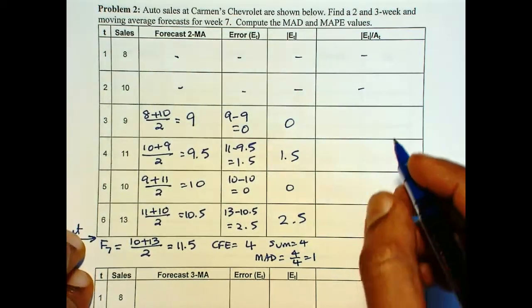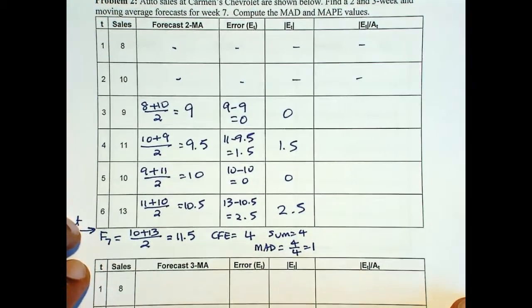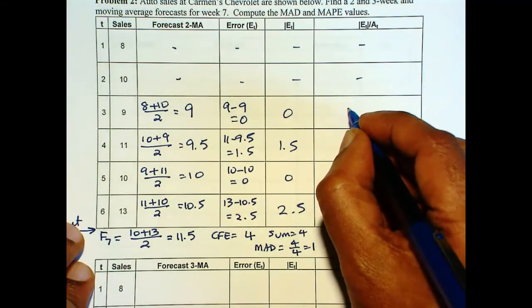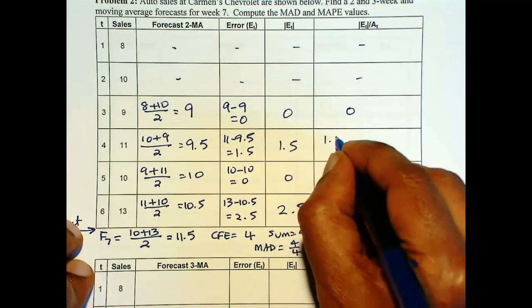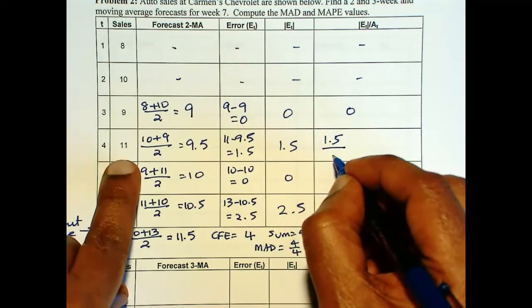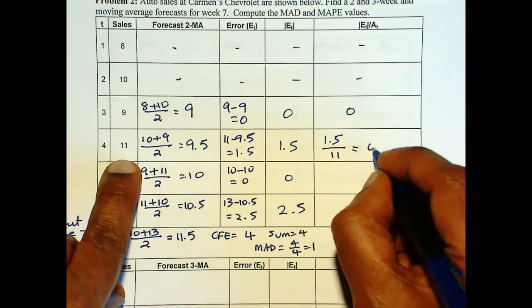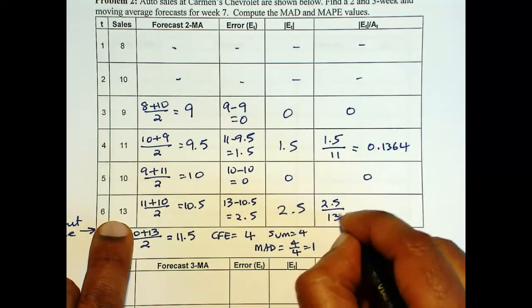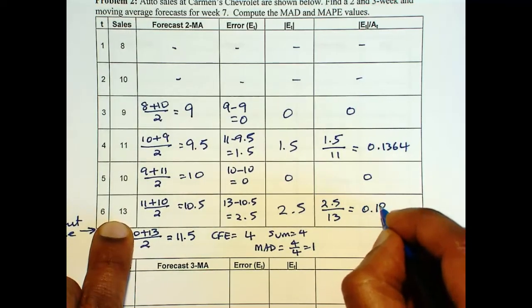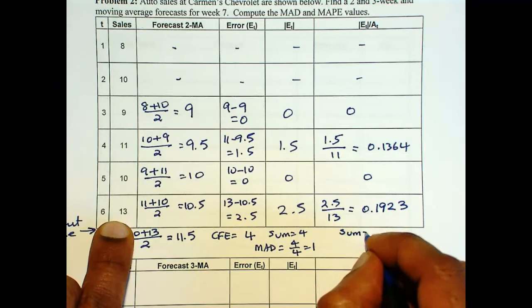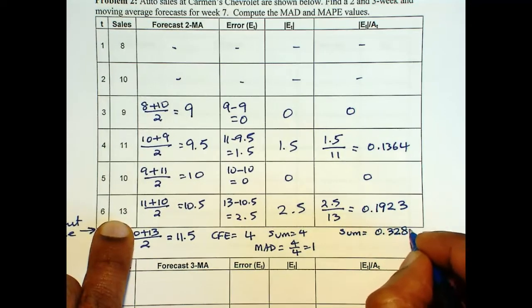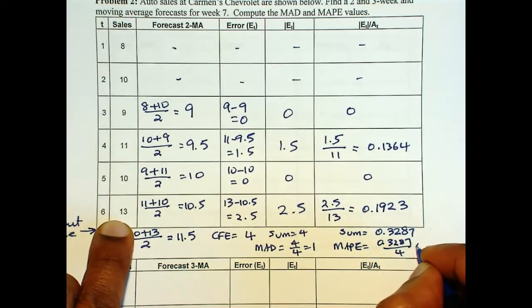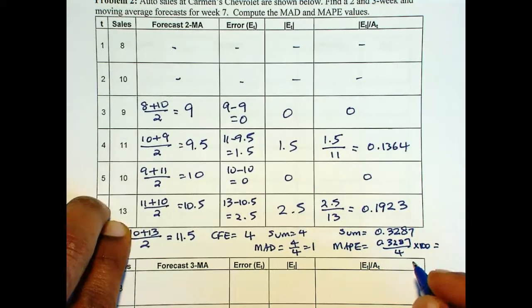Now to compute MAPE, in this problem we'll do only MAD and MAPE. We are not going to do MSE. So this is 0, then 1.5 divided by the actual value is 11, is 0.1364. So this is 0, 2.5 divided by 13 is 0.1923. So the sum is 0.3287. MAPE is 0.3287 over 4 times 100. So that gives us 8.22%.